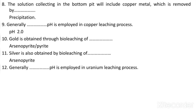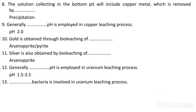The pH employed in the uranium leaching process is 1.5 to 3.5. The bacteria involved in the uranium leaching process are Thiobacillus ferroxidans.